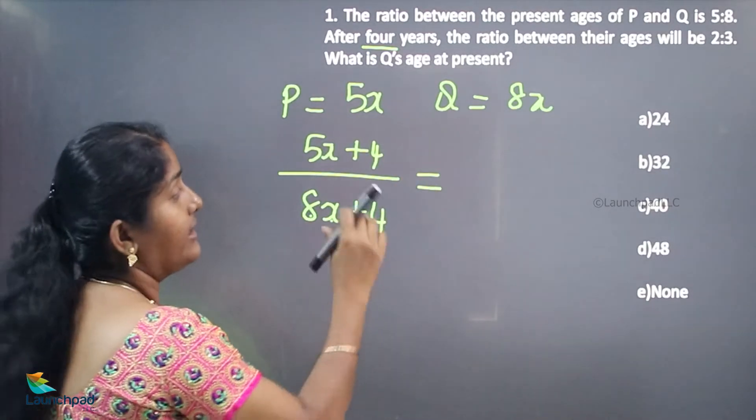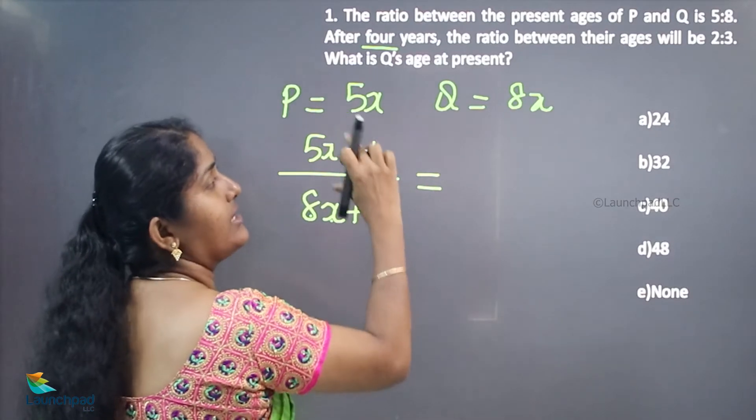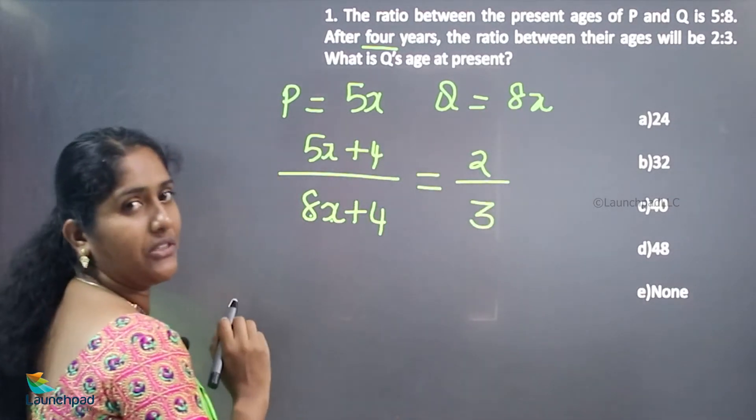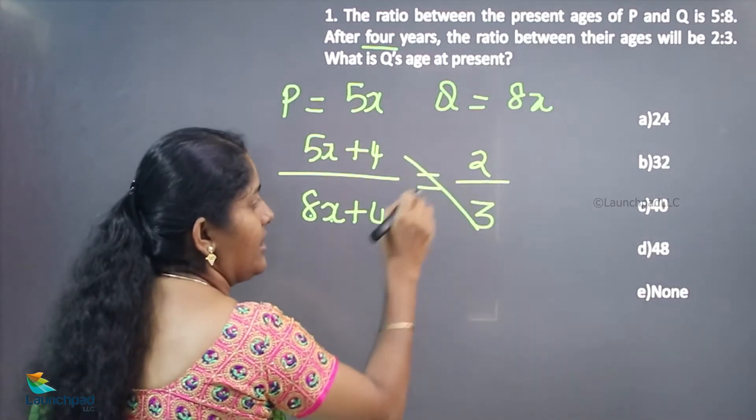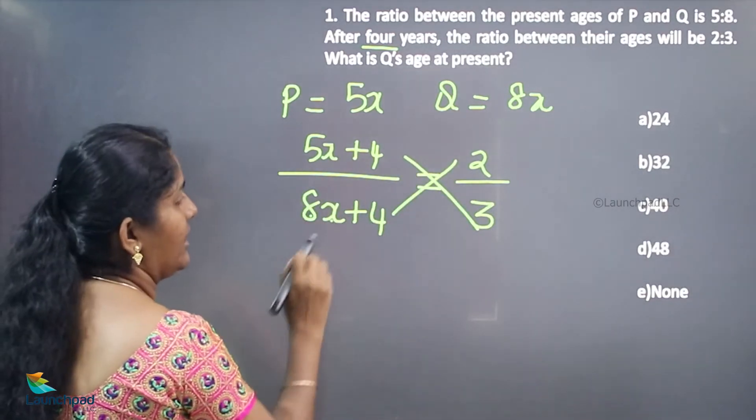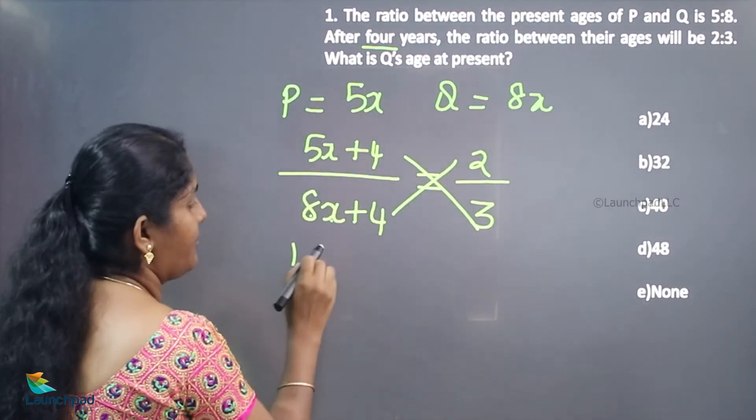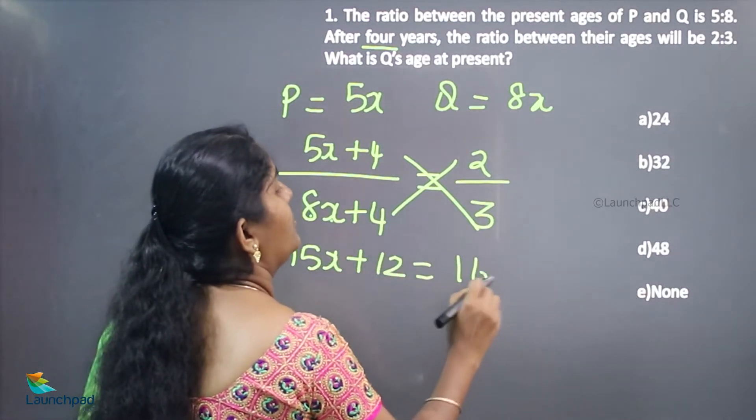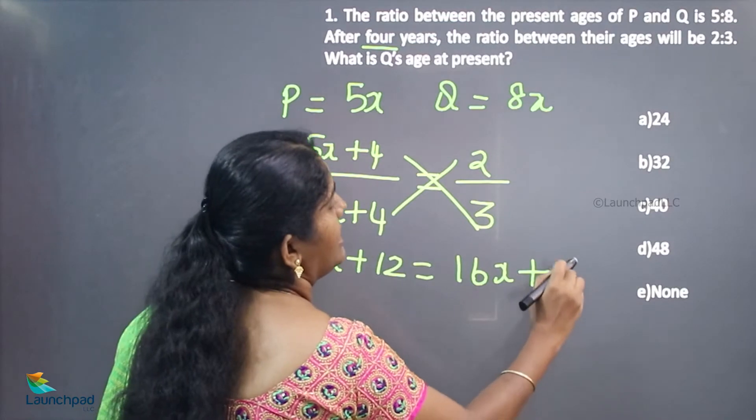The corresponding ratio after 4 years will be 2 to 3 respectively. While cross-multiplying the values, 5 times 3 gives 15X plus 12, which equals 8 times 2, giving 16X plus 8.